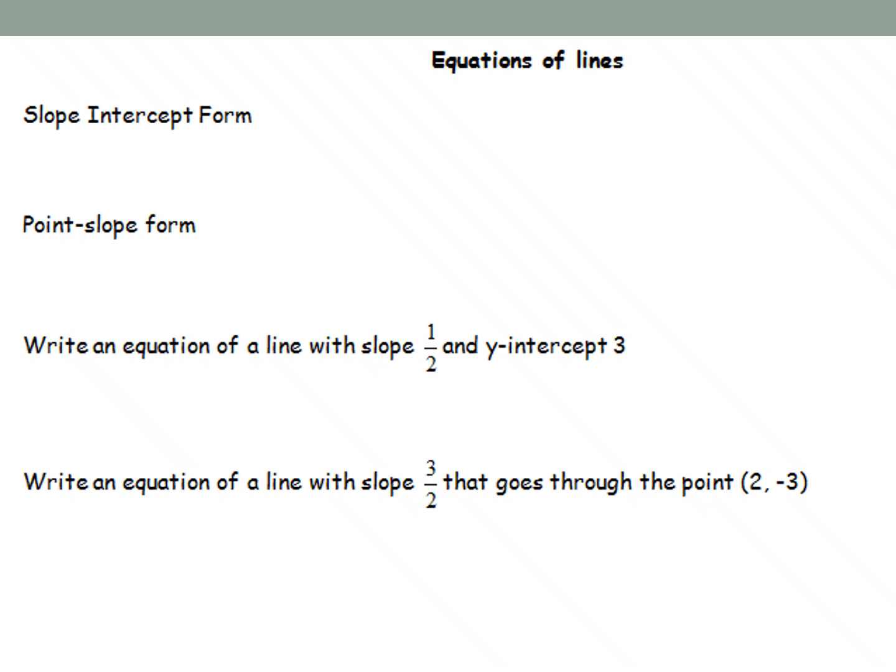Equations of lines. We have two different forms of lines. The one you are most familiar with is y equals mx plus b, which is your slope intercept form. But we have another one this year. This one is point slope form, and all that is is y minus y1 equals our slope, which is m, times x minus x1.